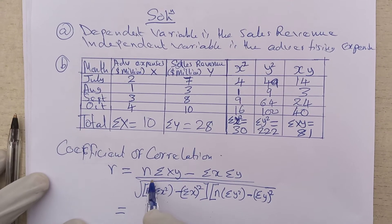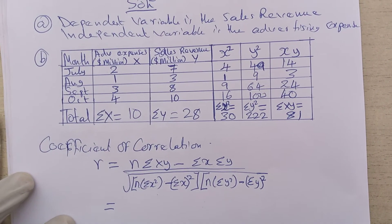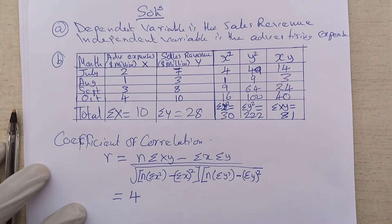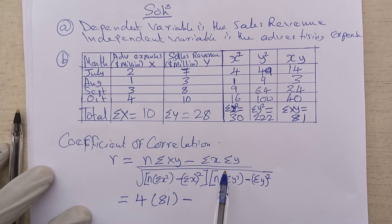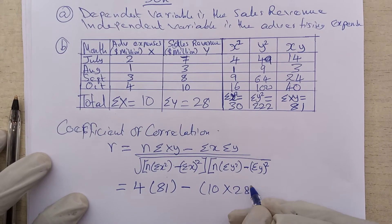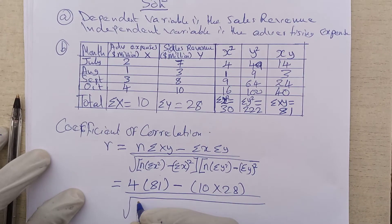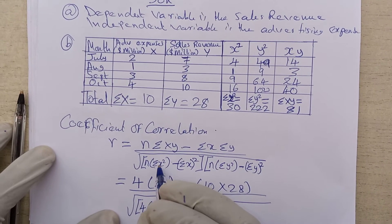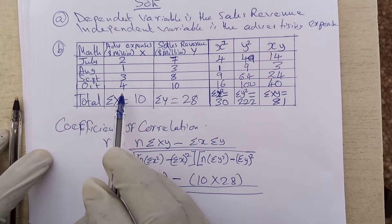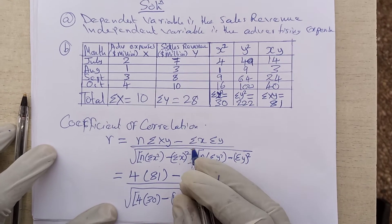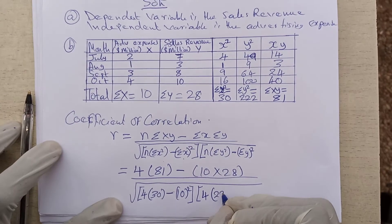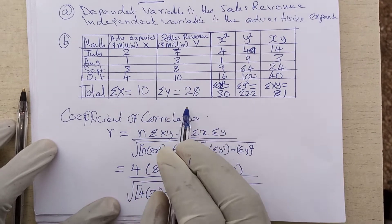According to the question, our N is four — we have a sample of four months. Sigma XY was eighty-one, so the numerator is four times eighty-one, minus sigma X times sigma Y, which is ten times twenty-eight. In the denominator, we have the square root of: (four times thirty, minus ten squared) multiplied by (four times sigma Y squared, minus twenty-eight squared).